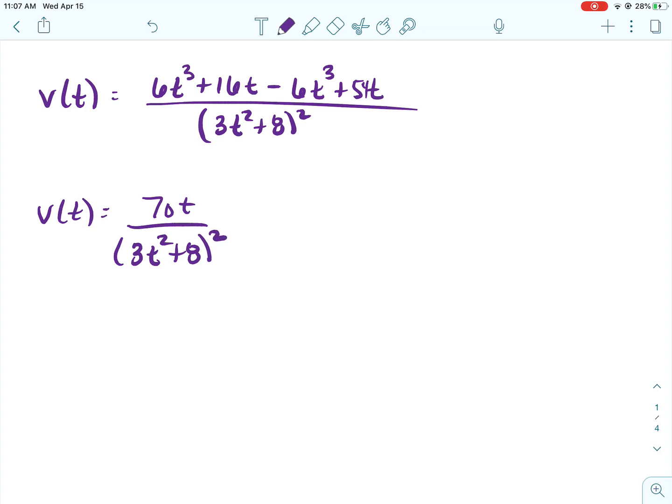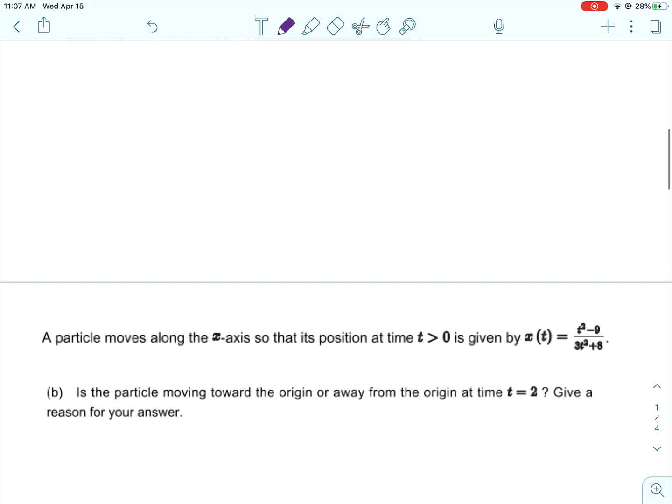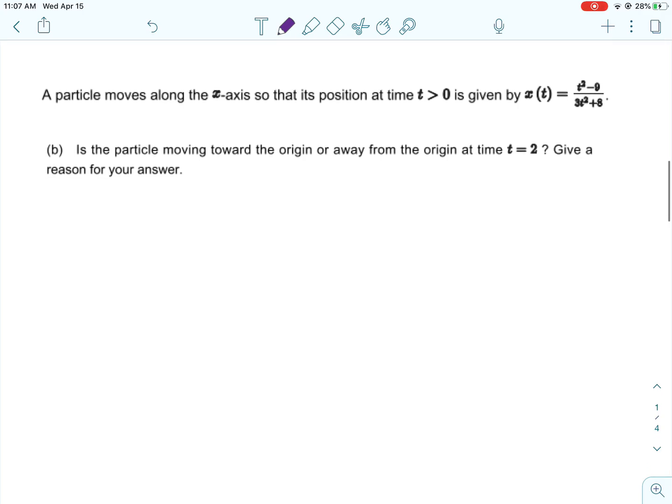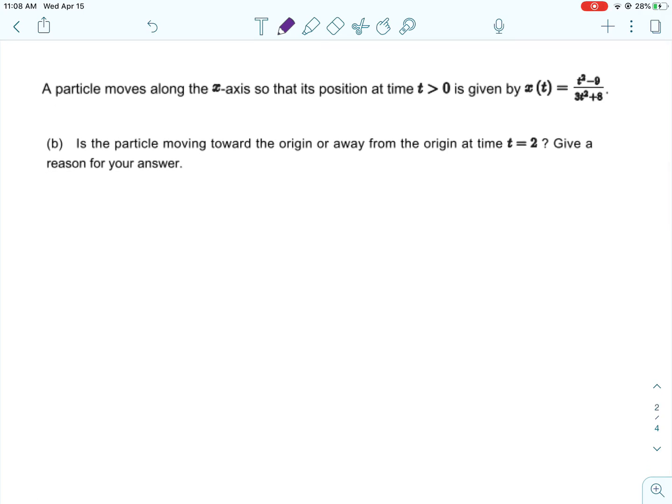Alright, so the t cubes cancel out. Whoops, that should have been 54, not just 5. And then when I add 16t and 54t, that gives us our 70t like we needed to get.